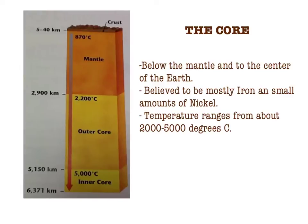The core is below the mantle and at the center of the Earth. Scientists estimate that temperatures within Earth's outer core and inner core, both made of iron and nickel, range from about 2,000 to 5,000 degrees Celsius. If these estimates are correct, then Earth's center may be as hot as the sun's surface.